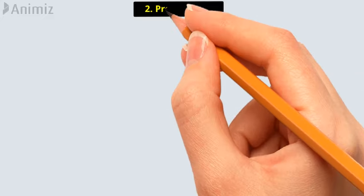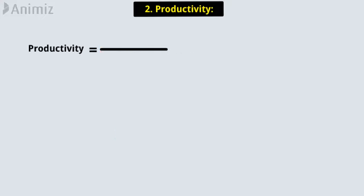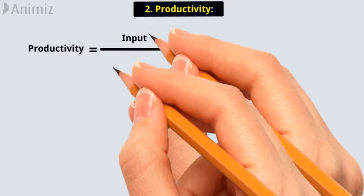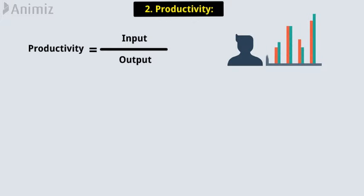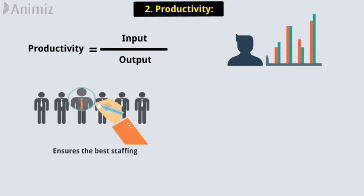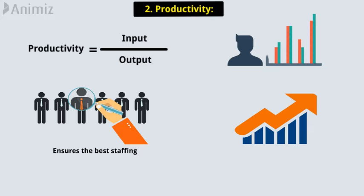2. Productivity. Productivity is actually the ratio of input and output. It is the only way to measure employees' effort. Operations management ensures the best staffing to maximize the output of a company.